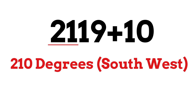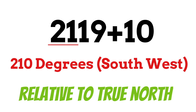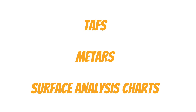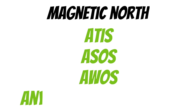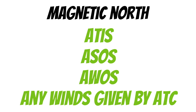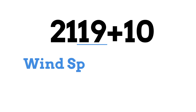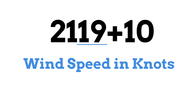One thing to keep in mind on these wind directions is that the direction is relative to true north, not magnetic north. This is also true with a lot of other wind products like TAFs, METARs, and surface analysis charts. ATIS broadcasts, ASOS, and AWOS, and wind data that ATC gives you will be in reference to magnetic north. The second two digits are the wind speed, and these are in knots — just as all speeds in aviation should be.